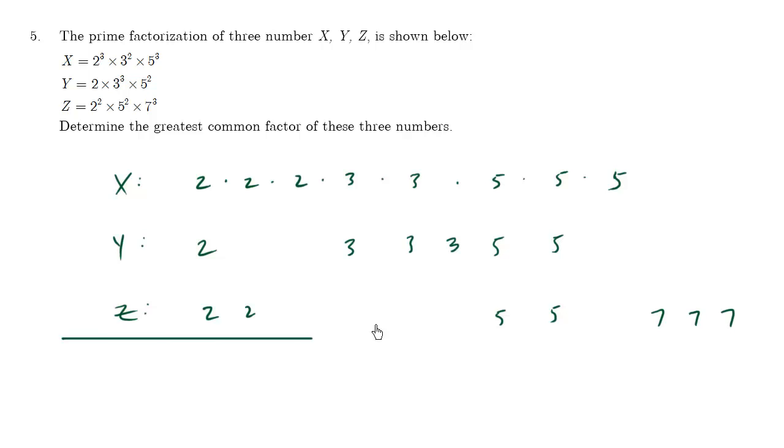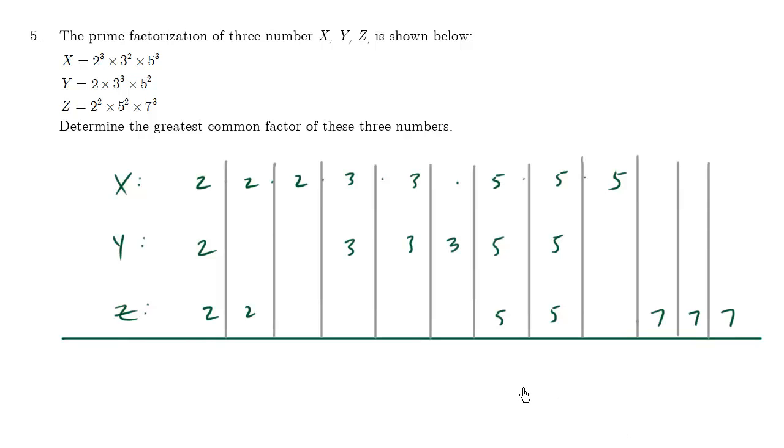Now how do we find the GCF? This is the highway lane trick. I'm going to draw these lines. And notice how each number is in its own clear, distinct lane, highway lane. And using this trick, and by the way, these numbers are also ordered from lowest to highest systematically.